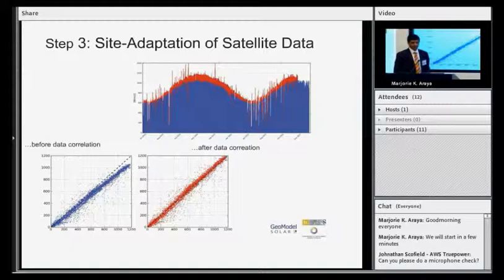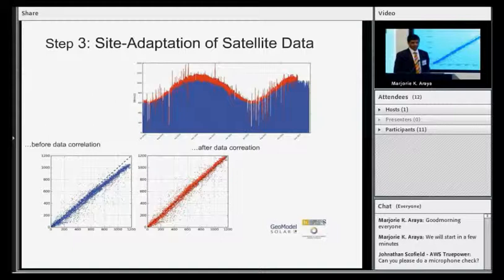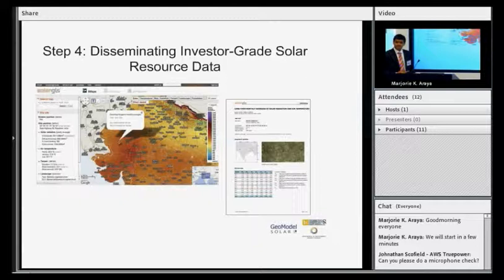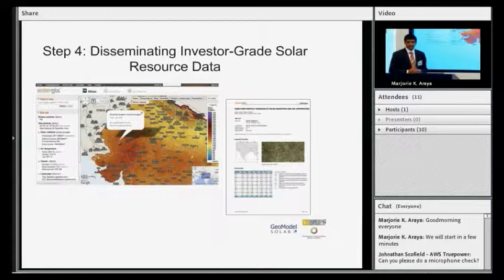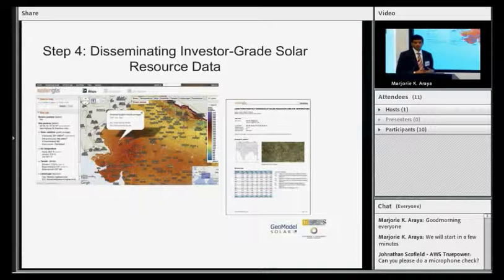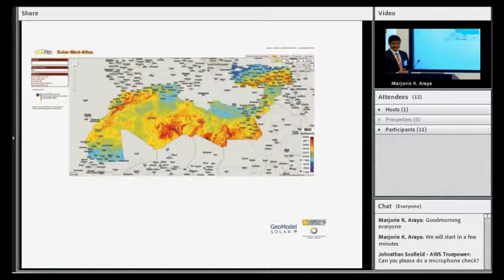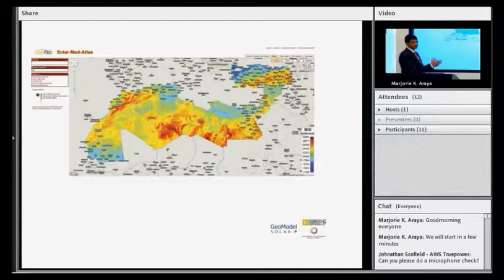And the last and most important step is to make this site-adapted data available to the public. That's the entire purpose of such a project. And for that, that can be done by the help of online tools. This is an example of an interactive mapping application where a user can click on any location on the map, and they can download long-term values of solar resource for that location. Another such example was Solar Med Atlas that was developed for the Mediterranean countries. This is a similar concept to the global solar and wind atlas that's being developed by RENA.